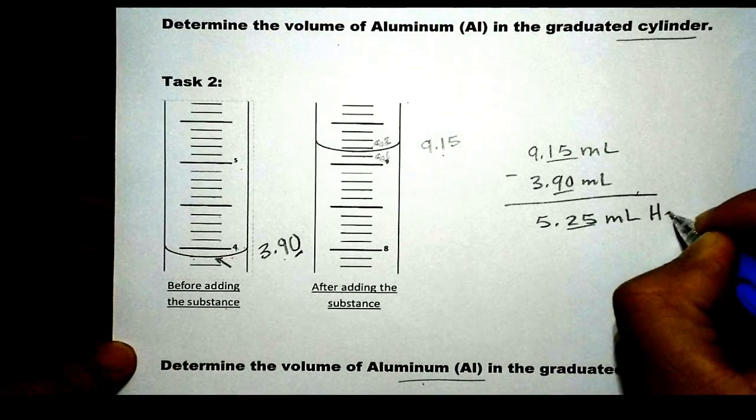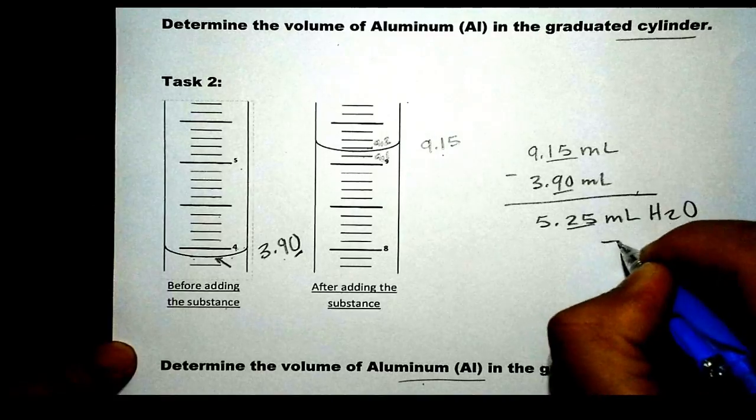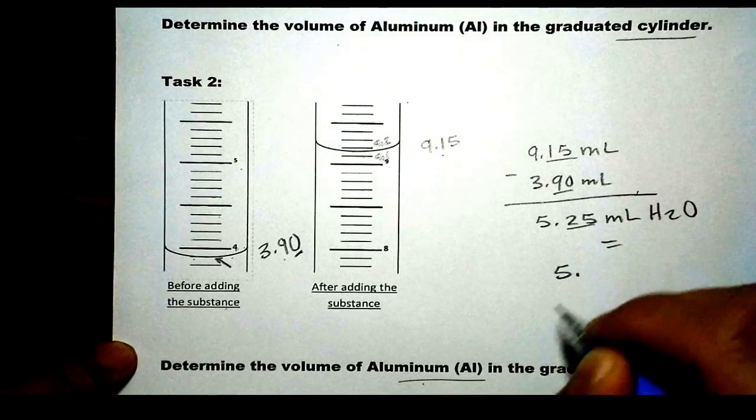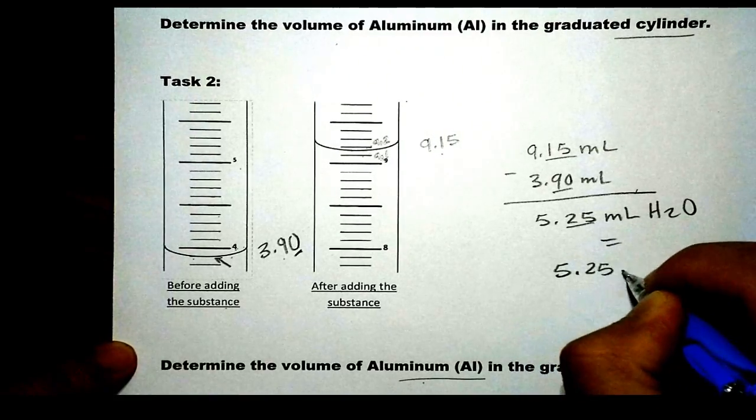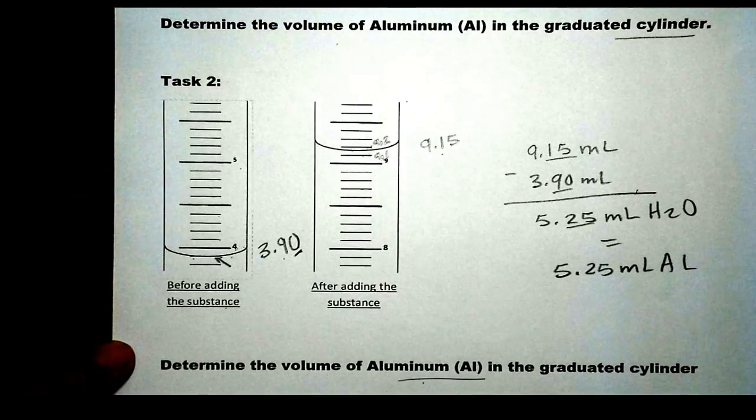So mL of H2O being displaced, which is equal to the volume of aluminum as well. Isn't that easy? This is the water displacement method.